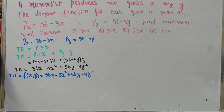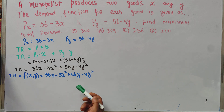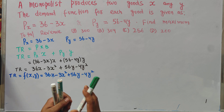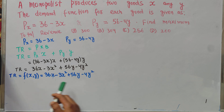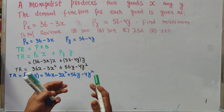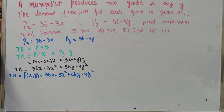We need to find the values of goods X and Y that maximize total revenue. This is a multivariate function and we need to find its critical point that satisfies the maximum condition. There are three conditions for a relative maximum.